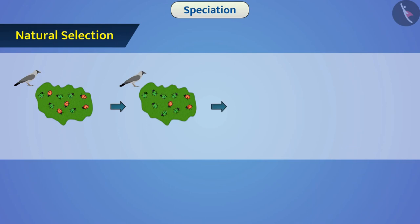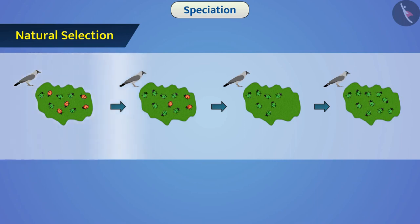Those organisms which do not have favorable adaptation get slowly eliminated. Those who survive transfer these beneficial traits to their offspring. Due to accumulation of such changes over generations, the population of organisms evolves.